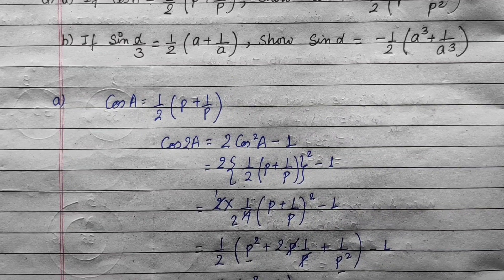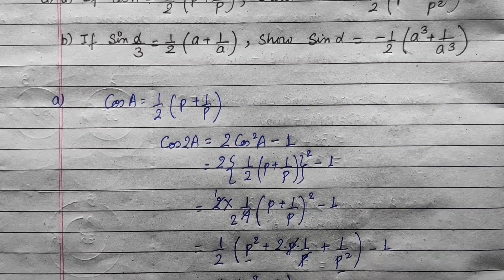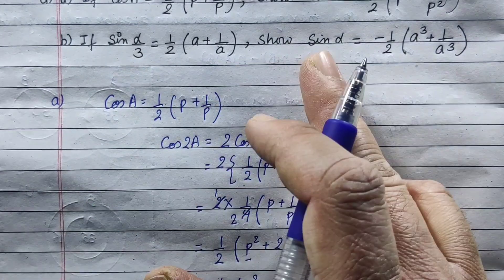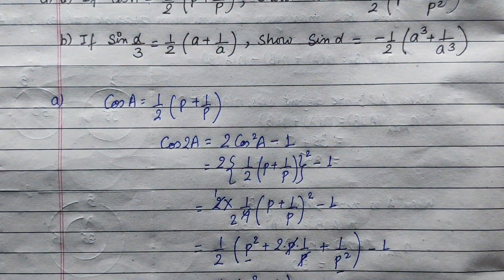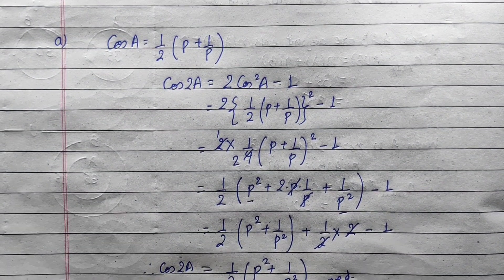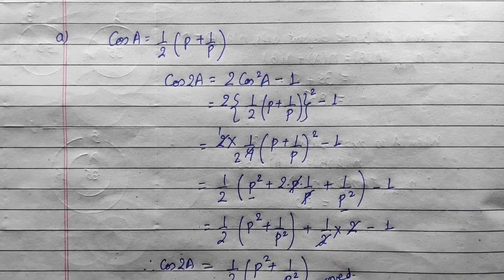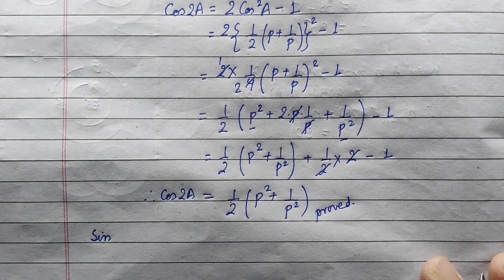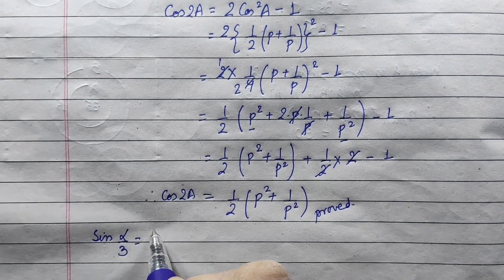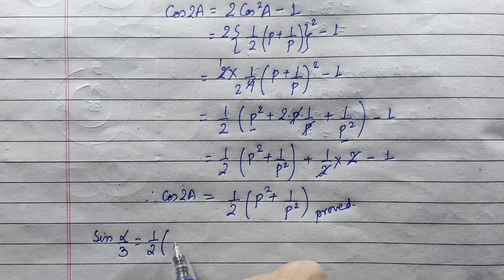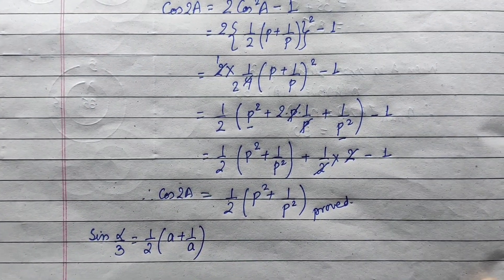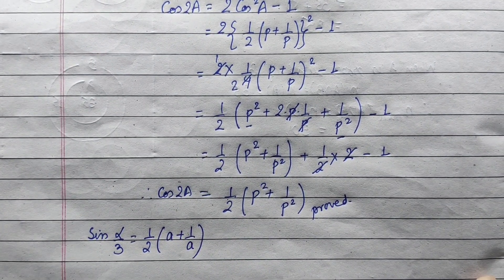We have multiple questions. The next multiple angle question will involve sin alpha by 3. We are given sin(α/3) equals half a plus 1 by a. We need to find sin alpha.